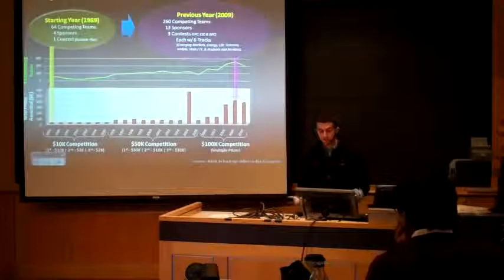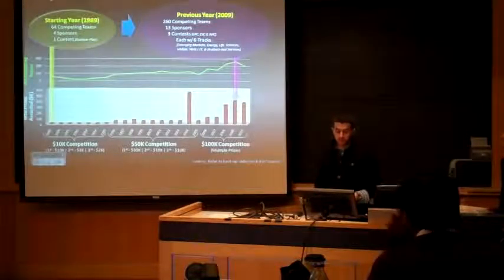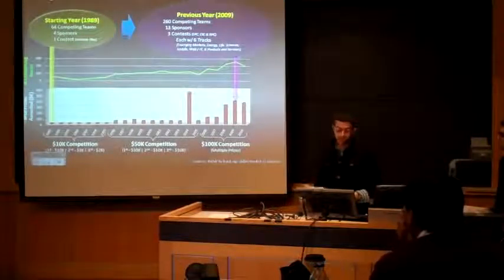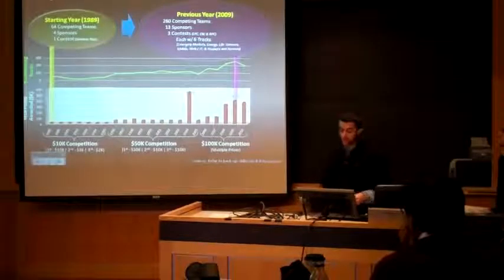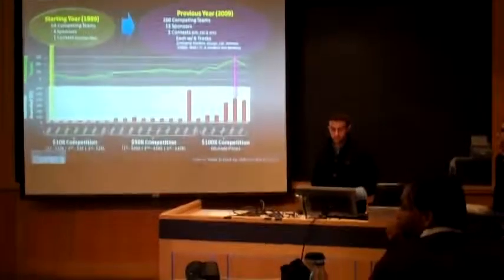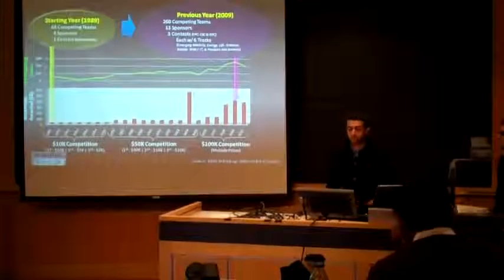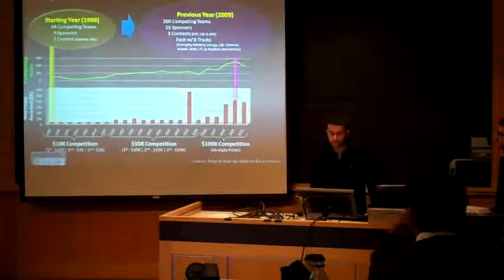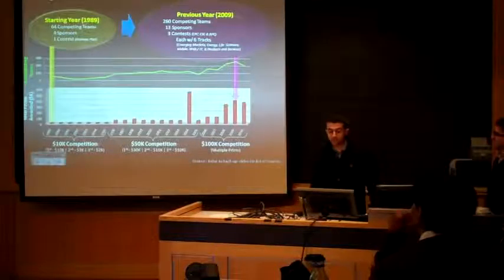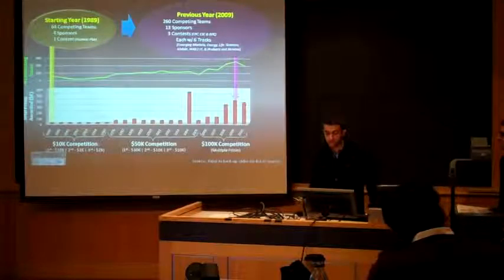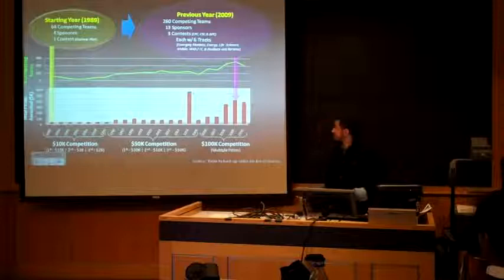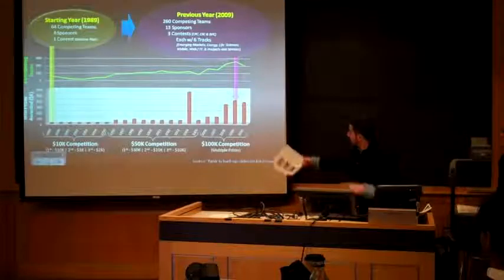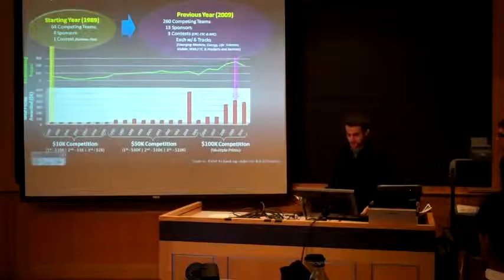A brief history about the competition: it started in 1989 and was initially branded as a 10K competition. It was rebranded in 1996 to 50K and in 2006 was again rebranded to 100K. In its first year they had 64 competing teams, four sponsors, and mainly one contest. In 2009 they had 260 competing teams, 13 sponsors, and three contests. The spike you see there is due to the 15th anniversary of the competition.